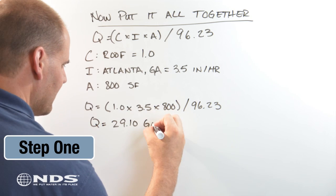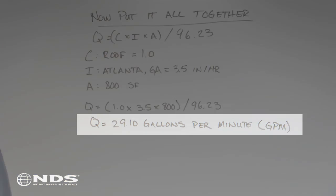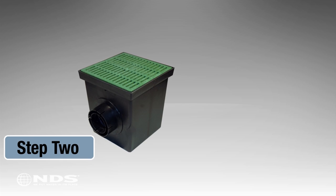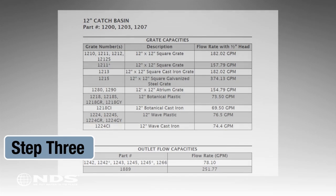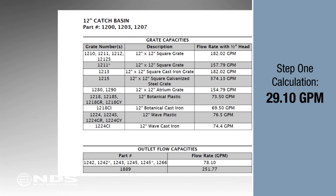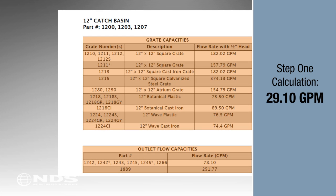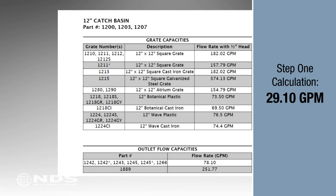To determine if a particular catch basin will work for your situation, follow these steps. Step 1: Calculate the runoff draining to the location of the basin. Step 2: Find the table for the catch basin you want to install. Step 3: Compare the runoff calculated in step 1 to the flow rate for both the grate and the outlet. These flow rates must be larger than the calculated runoff. If they are greater, then this catch basin will work for your project. If either value is less than the calculated runoff, then you must use a larger basin.